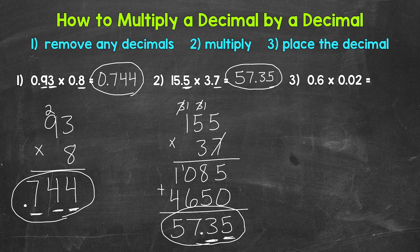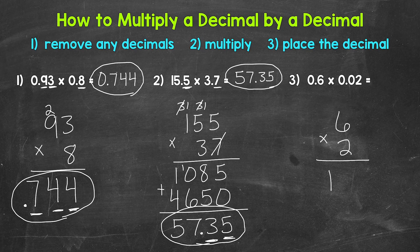Lastly, let's move on to number 3, where we have 6 tenths times 2 hundredths. For this example, the multiplication isn't going to be too complicated, but we need to be careful when placing the decimal. So let's start by removing any decimals, and we just have 6 times 2. Now let's multiply.